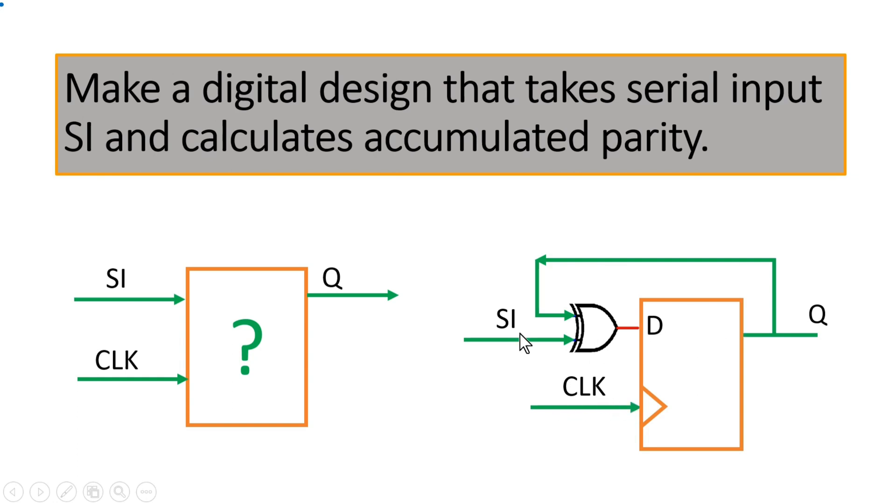Friends, parity here means that if the number of ones transferred on signal SI are odd, then Q should be high. If the number of transferred ones on signal SI are even, then Q should be zero.